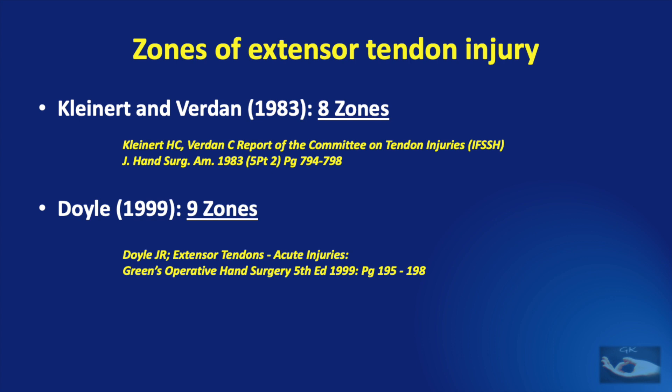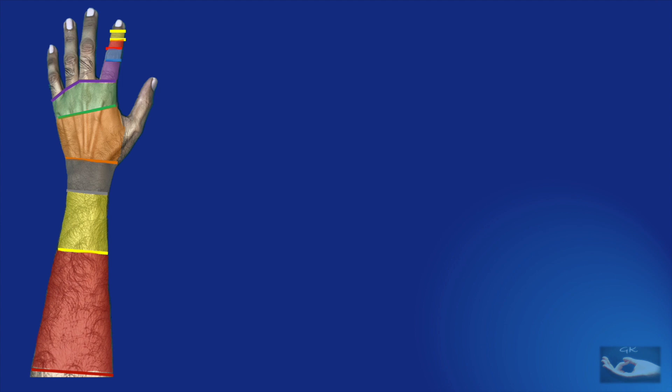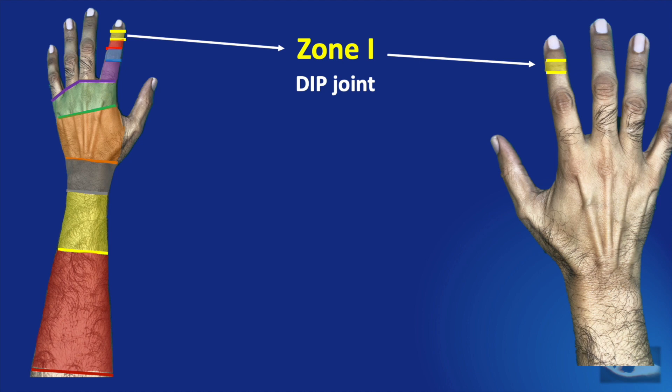This diagram represents the 9 zones described by Kleinert and Burden and modified by Doyle. We shall now see the description of each of these zones. Zone 1 injury represents injury to the extensor tendon at the dorsal aspect of the distal interphalangeal joint of the finger, otherwise known as the mallet finger.